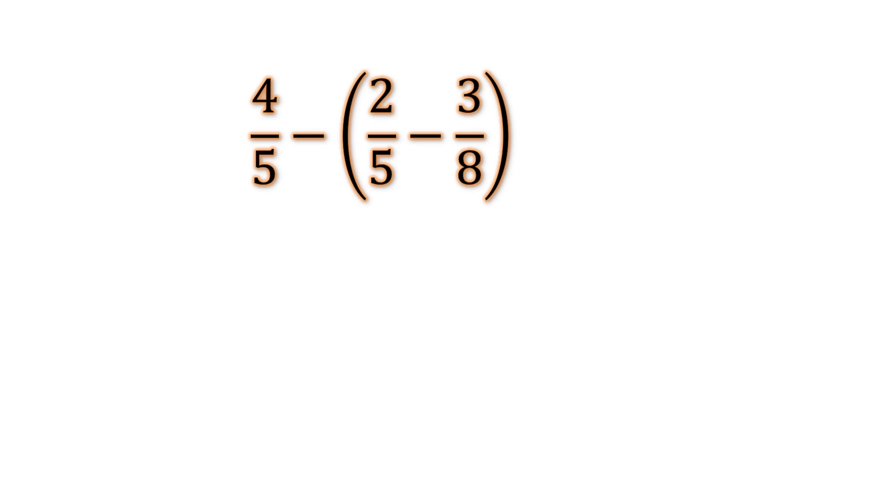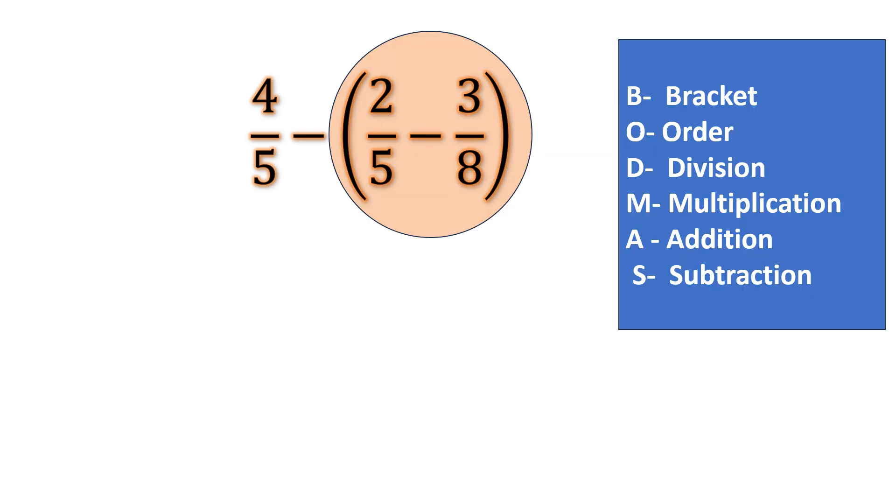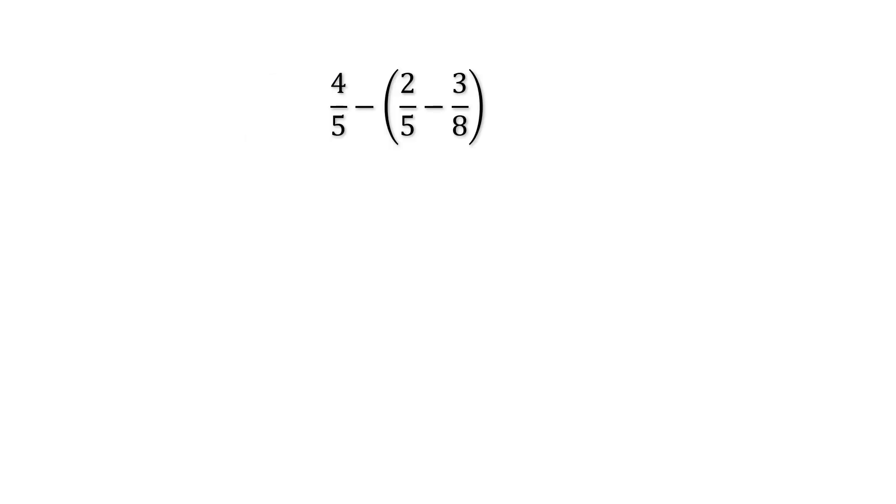Now we have to do the operation that is inside the bracket. So we will focus on 2 over 5 minus 3 over 8 because this is the rule that we obtained from the BODMAS rule that the bracket gets the first priority. For that we will write all the other things as it is but in our mind we will eliminate these things and we will focus just on the subtraction that is inside the bracket.